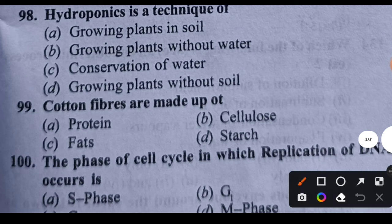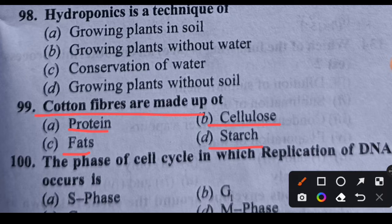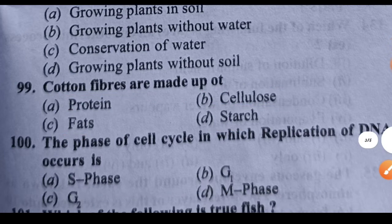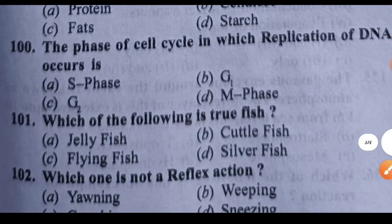Question 99: Cotton fibers are made up of which substance? Options: protein, cellulose, fats, or starch. Cotton fibers are made up of cellulose. Option B is the right answer.